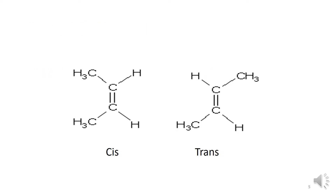Consider the two structures of butene, where we are seeing the spatial arrangement of a compound. Both compounds contain four carbon atoms, with a double bond between carbon number two and carbon number three. In the cis isomer, both methyl groups are on the same side. In the trans isomer, one methyl group is in one direction and the other methyl group is in the other direction. This kind of isomerism is known as geometrical isomerism.